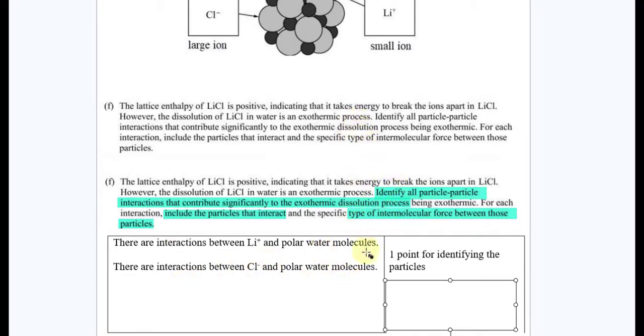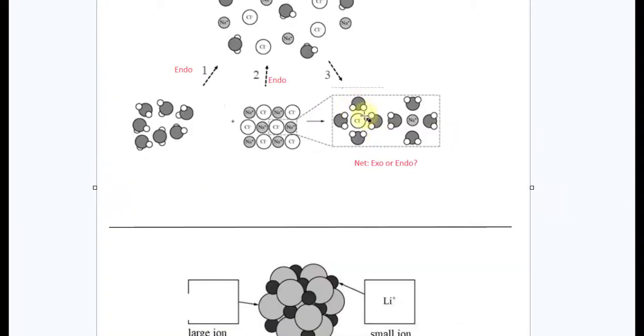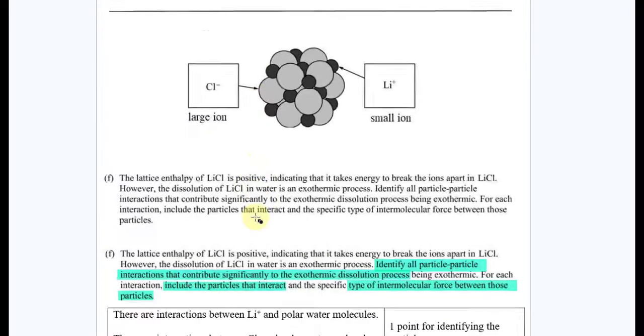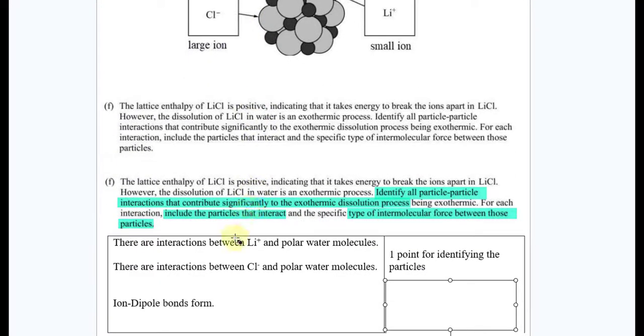And what makes the exothermic process? This is a tougher one. You had to know that the lithium and chlorides, and they do that with our dipole, our water dipole, forming this, and they call it the ion-dipole bond. That's exothermic. That's all you had to say.